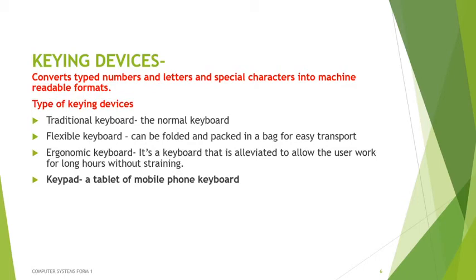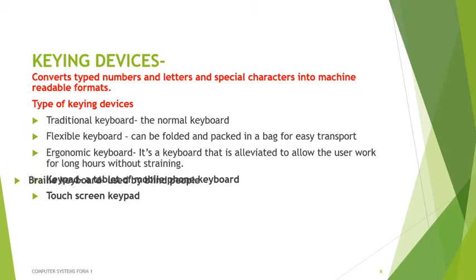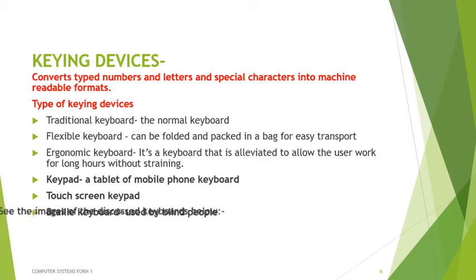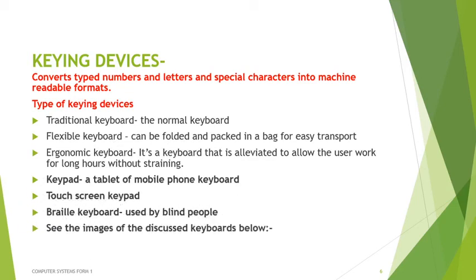A keypad is the keyboard found on a smartphone or tablet. There is also the touch screen keyboard, which is virtual — it appears on your screen but cannot be removed. For visually impaired people, there are special keyboards called braille keyboards. These are the types of keying devices.